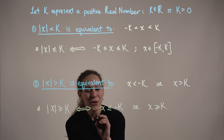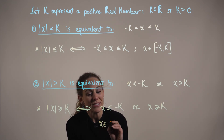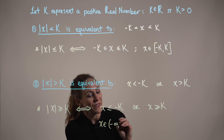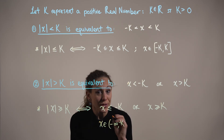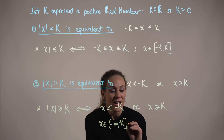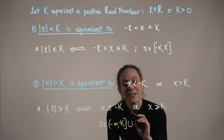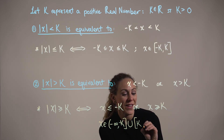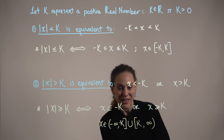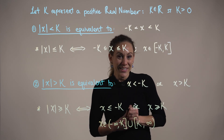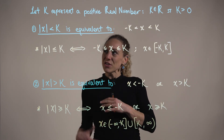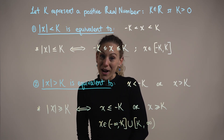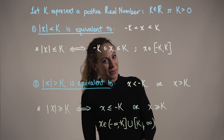As an interval, we say that x is an element of the half-open set from negative infinity up to and including negative k, united with the other half of the interval from positive k growing towards positive infinity. Now that we have generalized how to solve these two different forms of absolute value inequalities, let's go ahead and practice with the following examples.